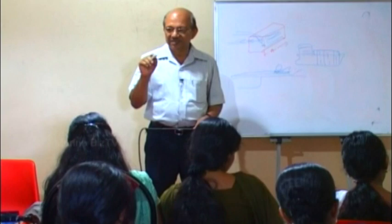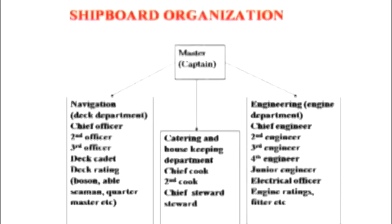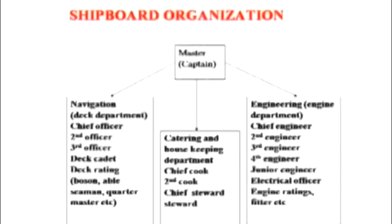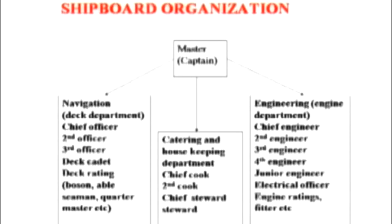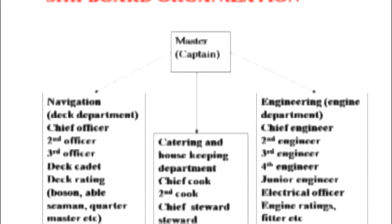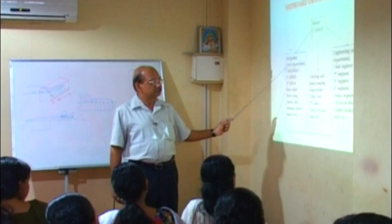In the same way, on a ship, we have three departments. All merchant ships will have three departments: one is the navigation department, another is the engineering department, and the third is the catering and housekeeping department. All ships will definitely have these three departments.